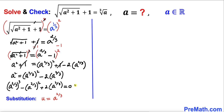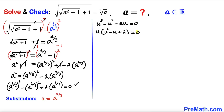After substitution, the equation becomes u cubed minus u squared plus two times u equals zero. Since u is common among all terms, we factor u out, giving u times the quantity u squared minus u plus two, equals zero.